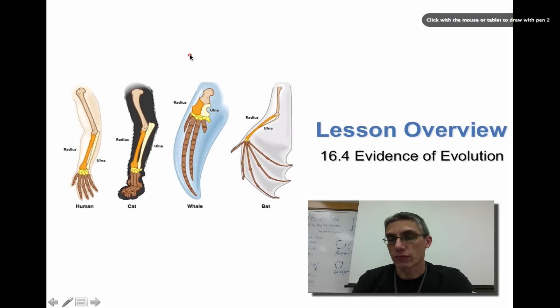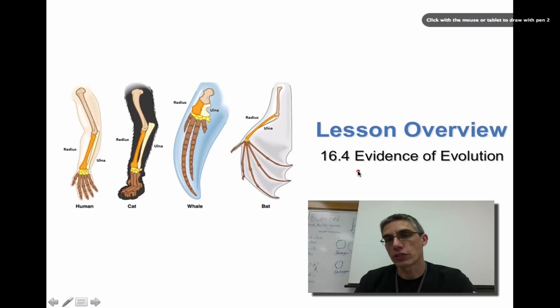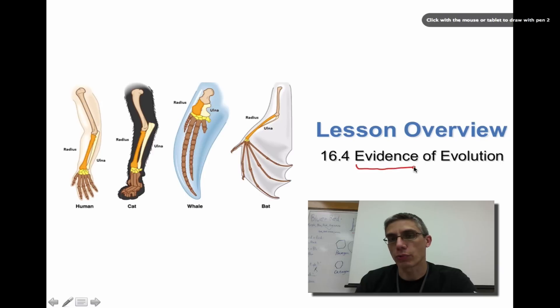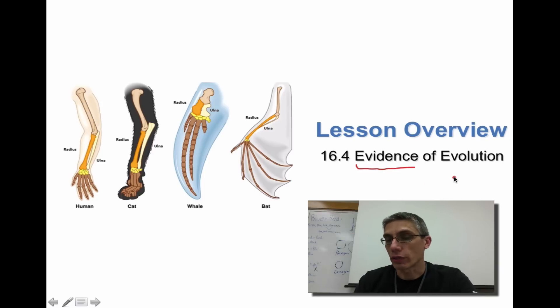This is going to be our final screencast for chapter 16. In section 16.4, we are going to wrap up this chapter by looking at all of the lines of evidence that have been collected up to this point to verify that evolution actually occurs.